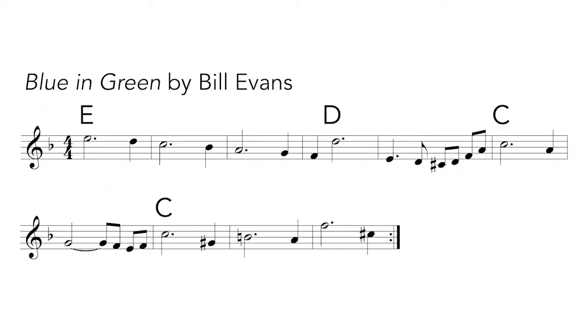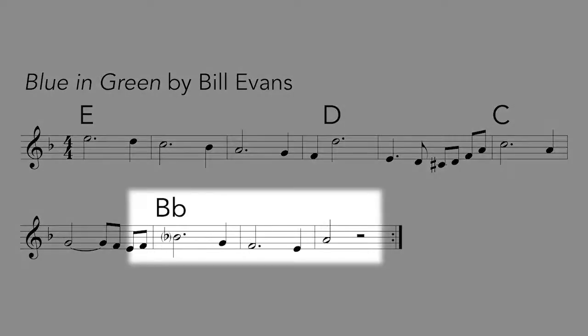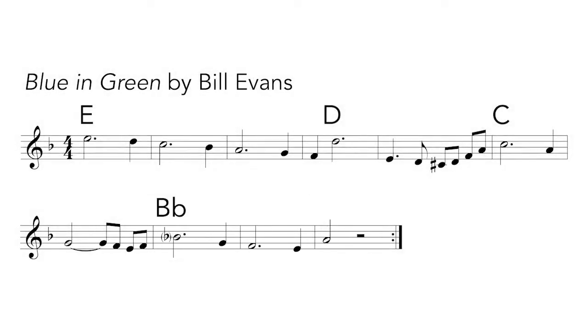A fantastic way to figure out what a note does and why it's special is to change it. Look what happens to the melody if we continue the downward line to the expected Bb instead of the C. Here's the E, the D, the C. Now a Bb, an A.